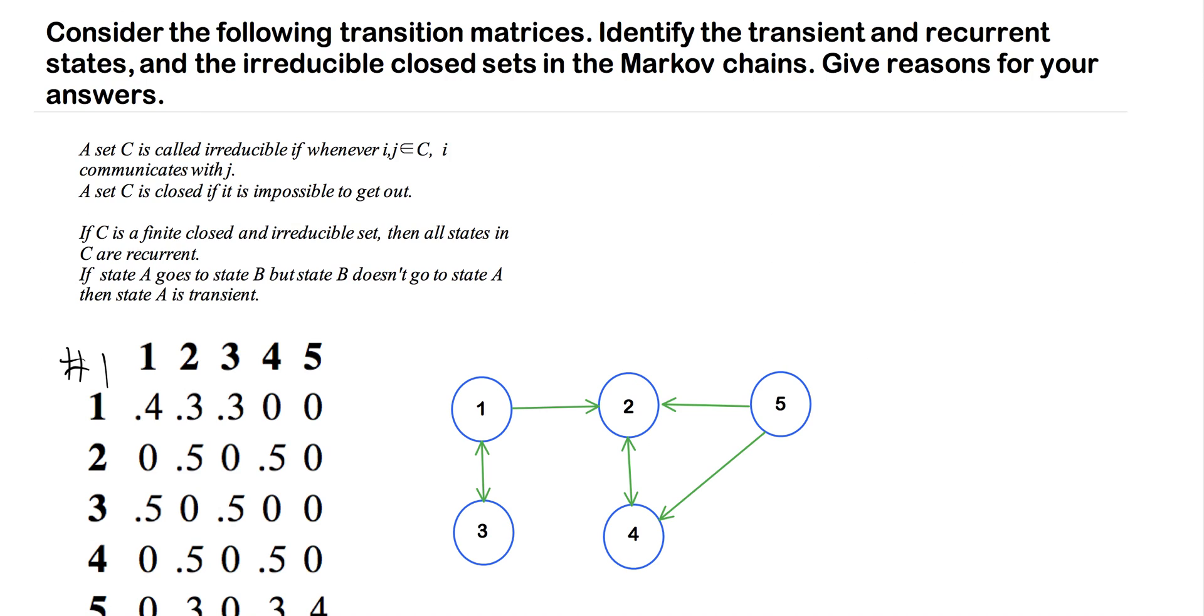If C is a finite, closed, and irreducible set, then all states in C are recurrent. So you can see, if we can just prove that some of these subsets of these Markov chains are closed and irreducible, then we know that all of the states in that subset are going to be recurrent.